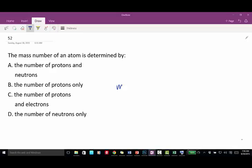The mass number of an atom is equal to the number of protons plus the number of neutrons.